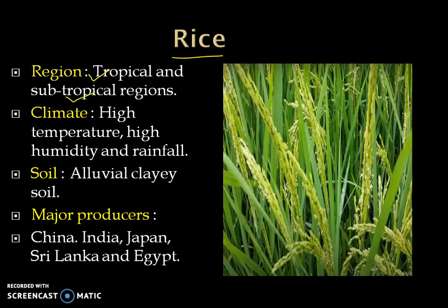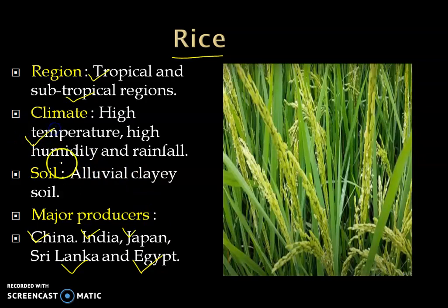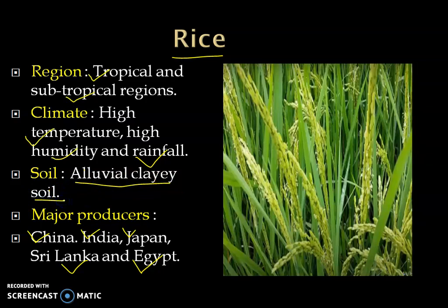Major producing countries of the world are China, India, Japan, Sri Lanka, and Egypt. Rice requires high temperature, high humidity and rainfall for cultivation. It requires alluvial clay soil. This type of soil can retain water for a long period of time.